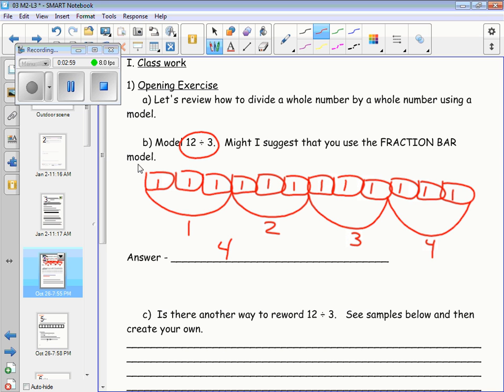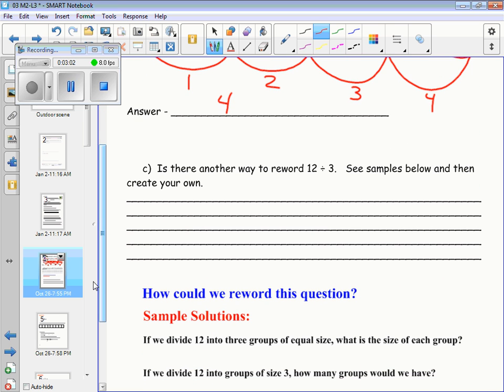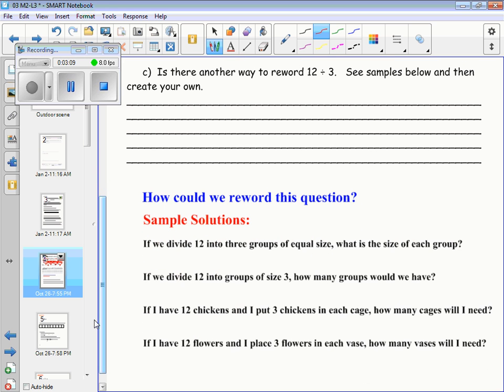And you can see how this model is going to carry over to when we now do fractions. Now the bottom half, they kind of coach you through this already. But another way to reword 12 divided by 3, you can see it in word problems many different ways. If we divide 12 into 3 groups of equal size, what's the size of each group? You can see it this way. If we divide 12 into groups of size 3, how many groups would we have? Or you can do chickens in a cage. If a total of 12 chickens are put in 3 chickens at a time, how many cages do you need? Obviously 4. Or 3 flowers per pot would make 4 flower pots.